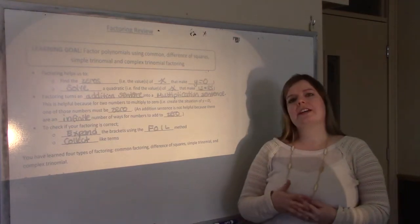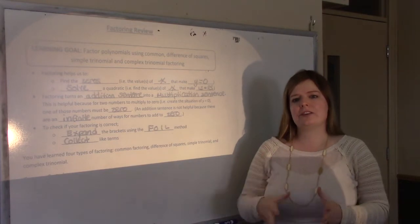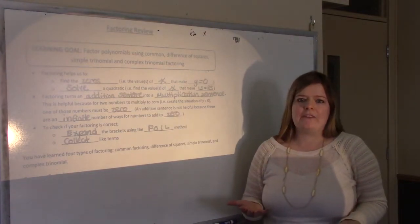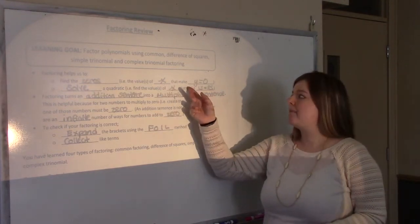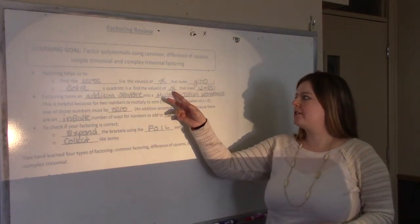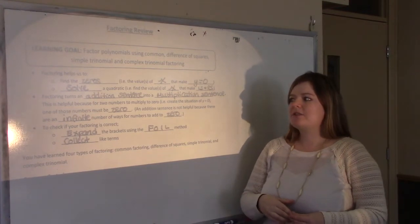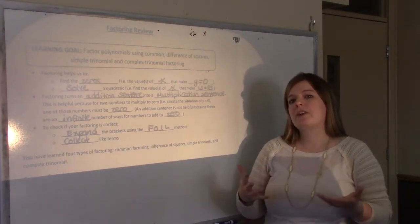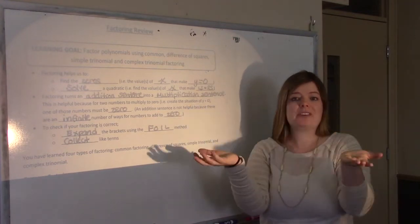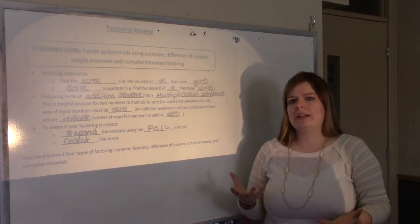Remember that factoring is kind of the opposite of expanding. It takes something that looks like an addition sentence and turns it into a multiplication sentence. The real reason for factoring is to find the zeros or the x-intercepts of any function or equation — that's the values of x that make y equal to zero. That's useful with graphing and also useful when solving a quadratic, to find the values of x that make left side equal right side.